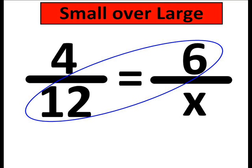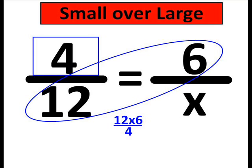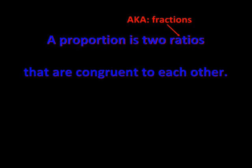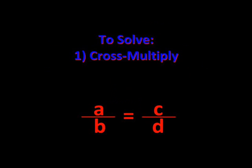So let's cross multiply. Now we've got 12 times 6, and now let's divide by 4. My proportion is two ratios that are congruent to each other. To solve, you just cross multiply and divide.